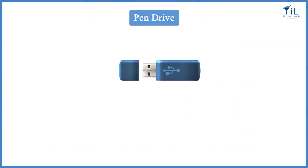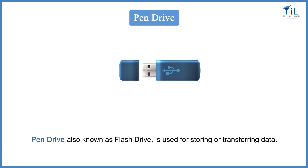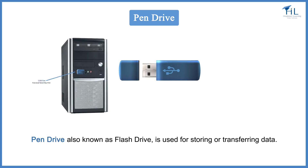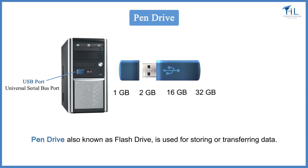A pen drive, also known as a flash drive, is used for storing or transferring data. It works when inserted into a USB port. It comes in various capacities like 1 GB, 2 GB, 16 GB, 32 GB, and up to 1 TB. It is very quick and easy to use.